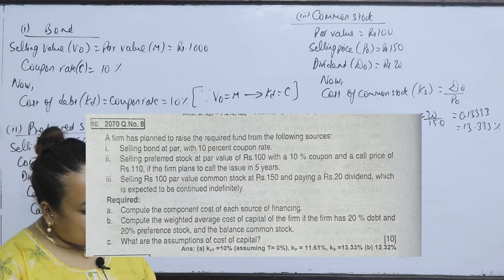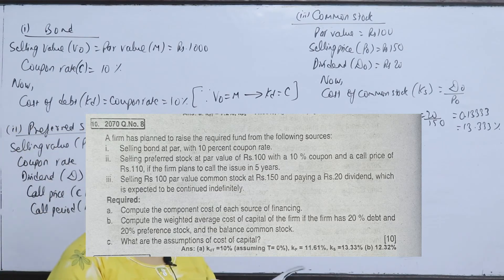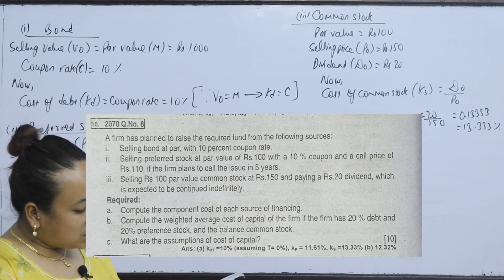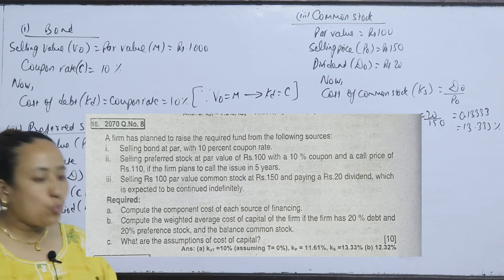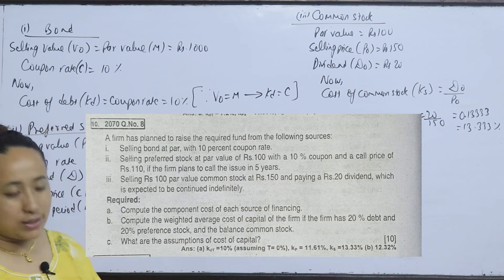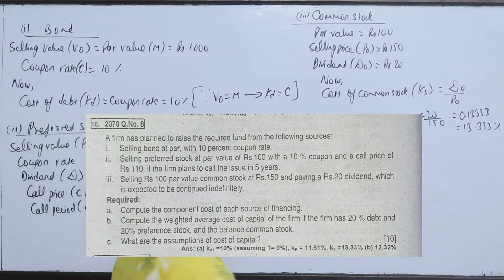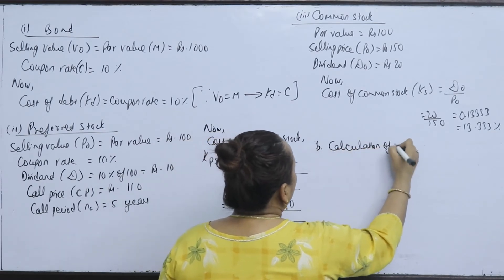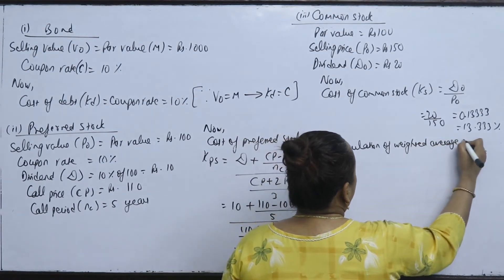Now we compute the weighted average cost of capital (WACC). The firm has 20% debt, 20% preferred stock, and the balance — 60% — is common stock. Total weights add to 100%.